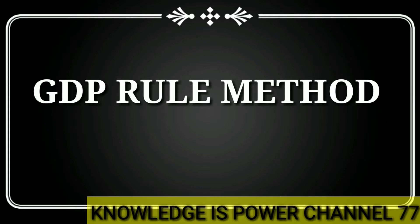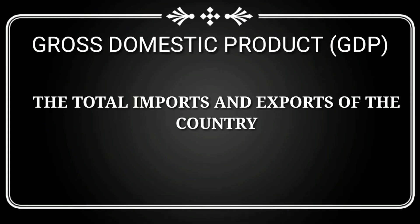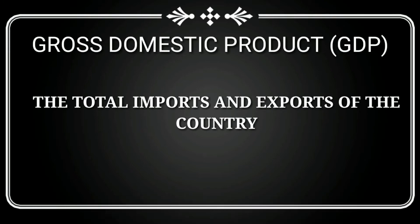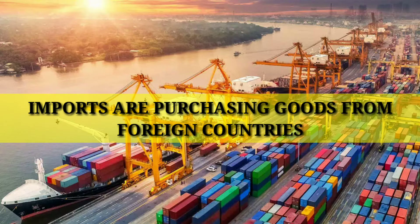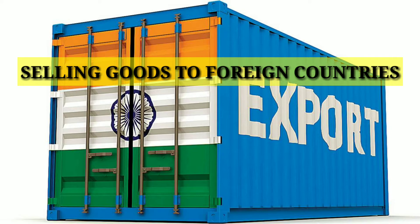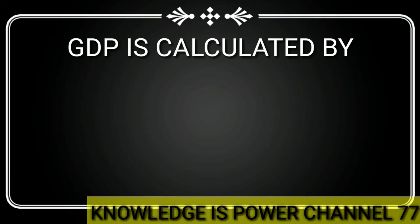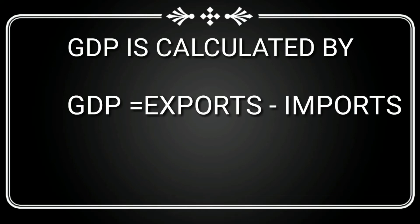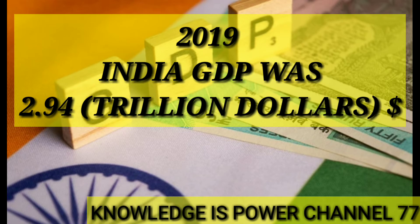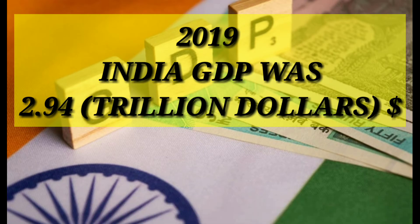There are many ways, but the common method used is the GDP rule method. GDP, which is Gross Domestic Product, is the total amount of imports and exports of the country. Imports are buying goods from a foreign country and exports are selling goods to a foreign country. So GDP is calculated by exports minus imports. In 2019, GDP in India was 2.94 trillion dollars.